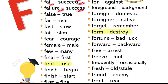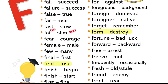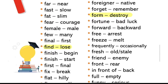Failure aur success. False aur true. For — door hai, near — paas mein hai. Fast aur slow. Fat hai, slim hai. Fear hai, courage — be courageous. Female aur male. Few aur many.